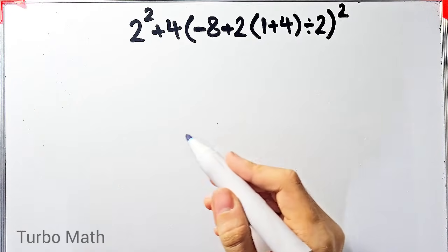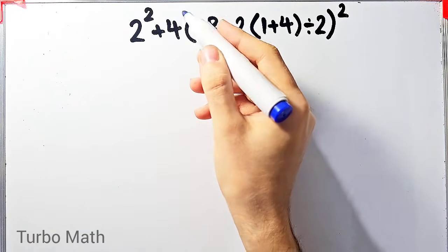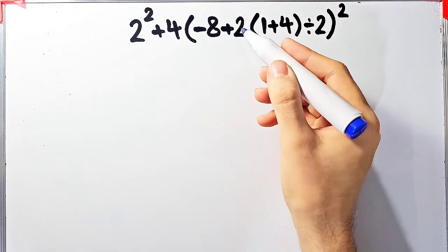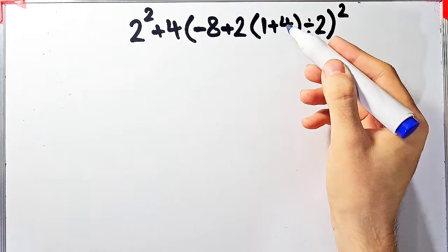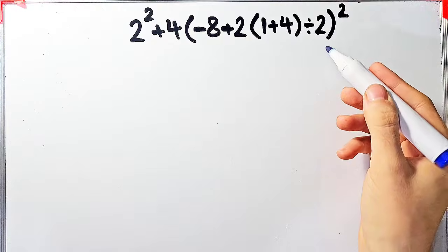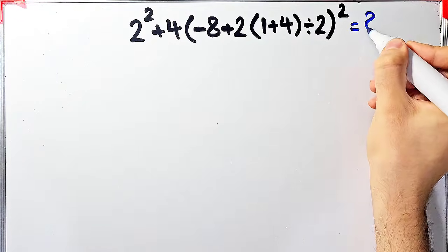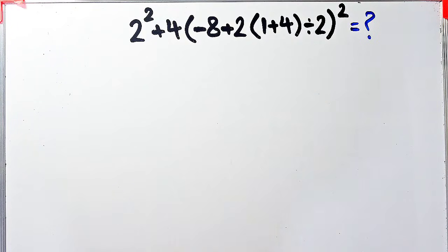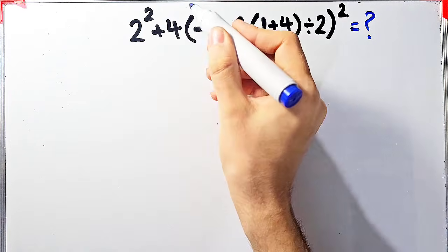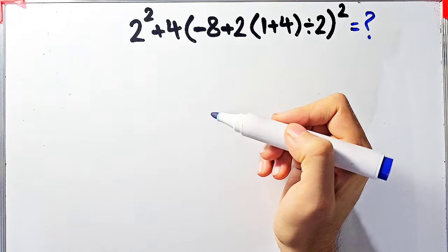In the first question we have: 2 to the power of 2, plus 4, then times open parenthesis (negative 8 plus 2 times (1 plus 4), divided by 2), all of that to the power of 2. What is the answer of this question? This question involves addition, parentheses, exponents, division, and multiplication.